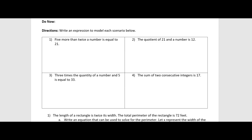Number one says five more than twice a number is equal to 21. So five more means we're going to be adding five, and twice a number means two times some number. They don't tell us what it is so we have to use a variable. Twice a number is going to be 2x, and then five more than twice a number means 2x plus 5 is equal to 21.